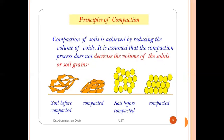Principles of compaction: compaction of soils is achieved by reducing the volume of voids. It is assumed that the compaction process does not decrease the volume of solids or soil grains. The figure shows different portions — first, soil before compaction, which is loose with air gaps; and next, compacted soil where the air gaps are collapsed.